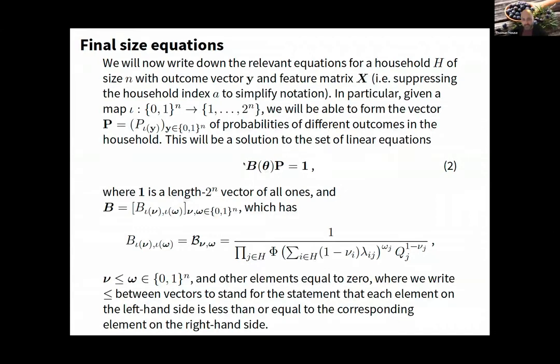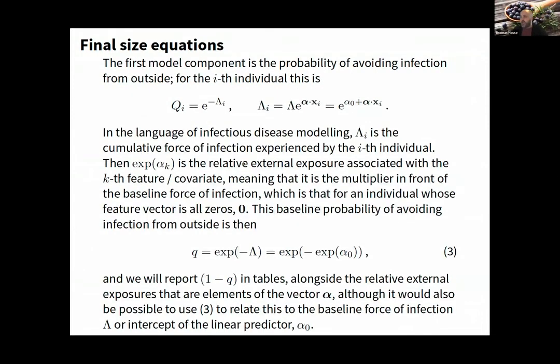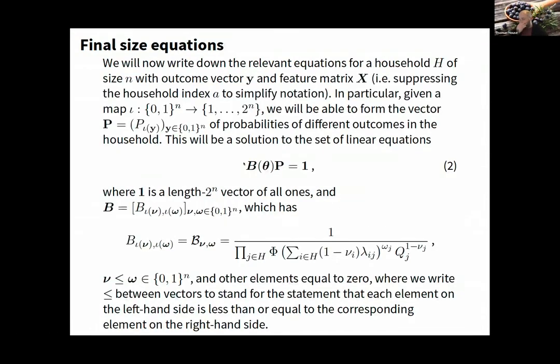The math is there for people interested, but to get insight out of the data about clustering formally, you need to solve these Ball equations. Outcomes are not independent—whether I get COVID depends on whether someone I share a household with gets COVID, not just my properties or random household effects.